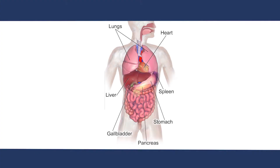The abdominal cavity is a large body cavity containing abdominal organs, and these include the stomach, liver, the gallbladder, the spleen, the pancreas, the small bowel, and then the large bowel which comprises the colon and rectum. The abdominal cavity contents and the abdominal wall are all covered by peritoneum.